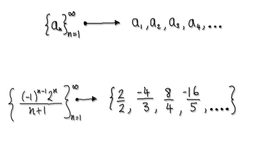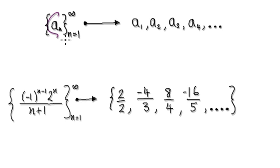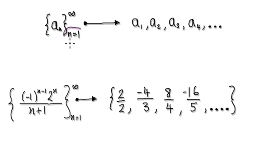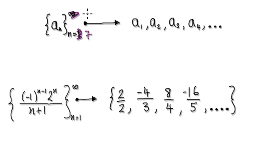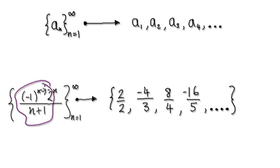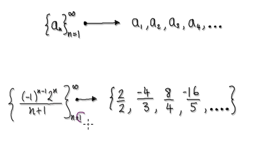Typically your sequence will look something like this. You have some sort of formula that will then govern your sequence — this would be your starting term and this would be your ending term. It doesn't always have to start at 1; it can start at, let's say, 7 and end at, let's say, 53. So you have some sort of formula that will then generate your sequence.